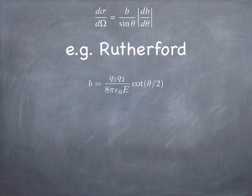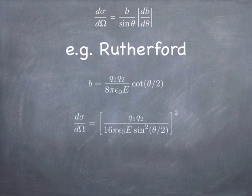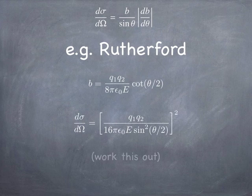One thing we can do, though, is to, given this relationship between b and theta, we can get the corresponding differential cross-section, which is d-sigma d-omega. And using the formula that we have at the top of the screen there, and we'll probably try and do that as board work today, if we have time. And so you can look forward to that.